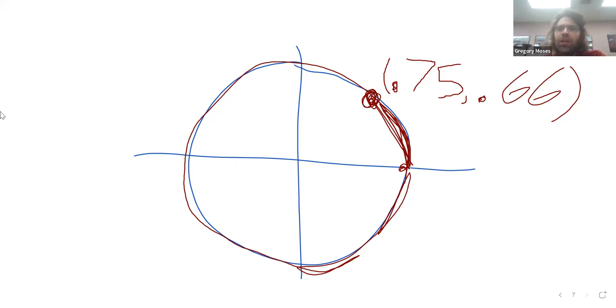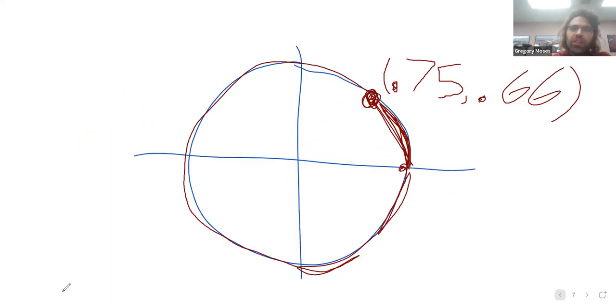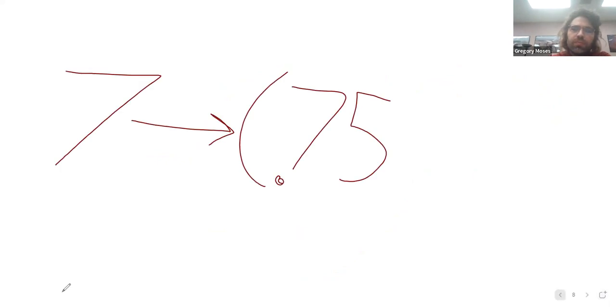Again, we'll see how I get these numbers a little later in the course. So an input of seven gives this point as an output.